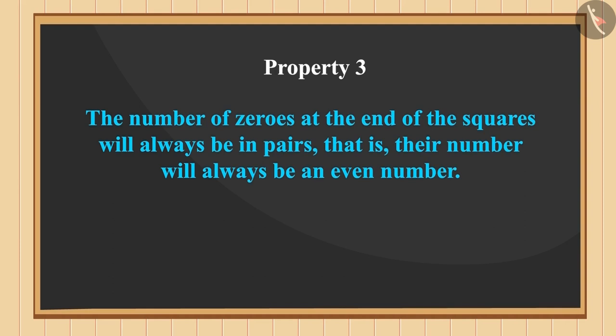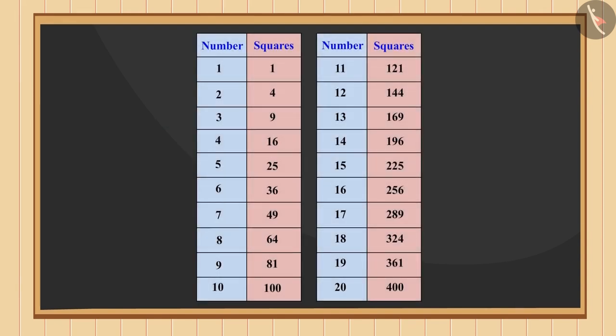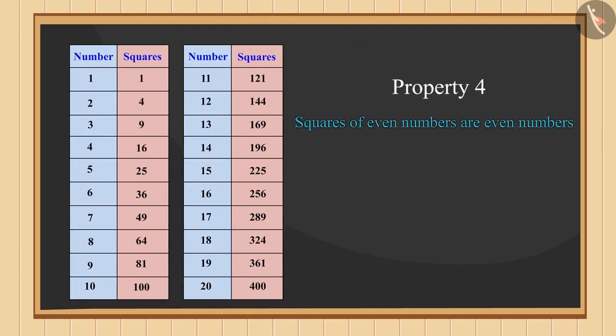This means the number of zeros at the end of the squares will always be in pairs, that is, their number will always be an even number. If you look at the table of squares carefully, you will find that the squares of even numbers are even numbers and the squares of odd numbers are odd numbers.